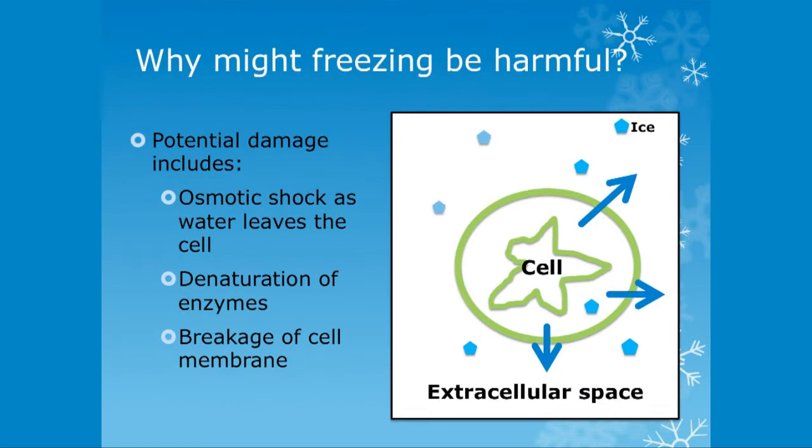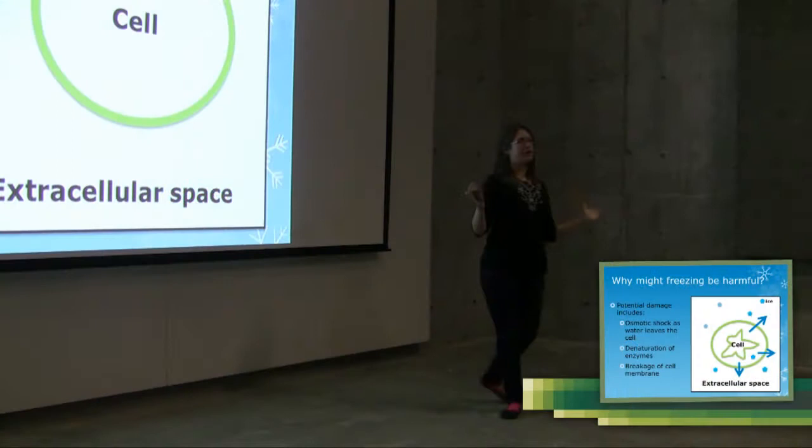So all animals are made up of cells. So we've got these all through our bodies. And outside of the cells, we have what we call the extracellular space. So that's all the liquid outside the cell. You can think of water in the cell, water outside of the cell.